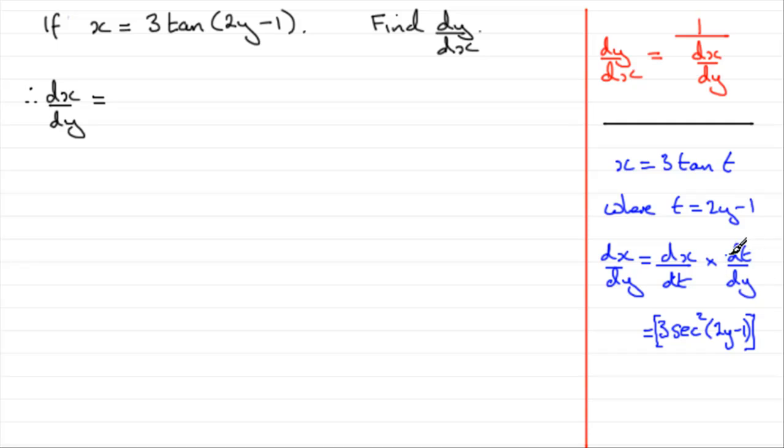Now, I have to times it by dt dy. So, if I differentiate t with respect to y, it's just going to simply be 2. So, I'll pop a 2 in there. And if I clean this up, I'm going to get 6 sec squared. Okay, we'll just write it in 6 sec squared 2y minus 1.